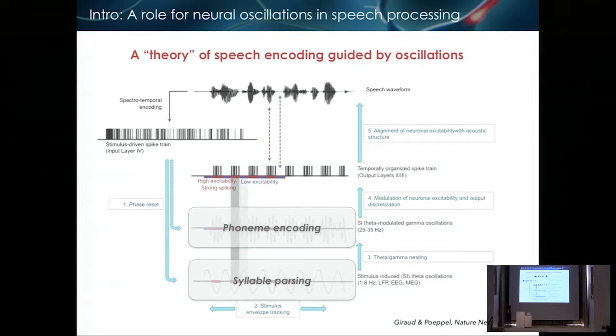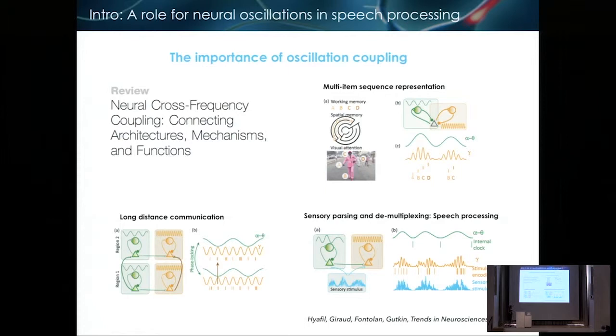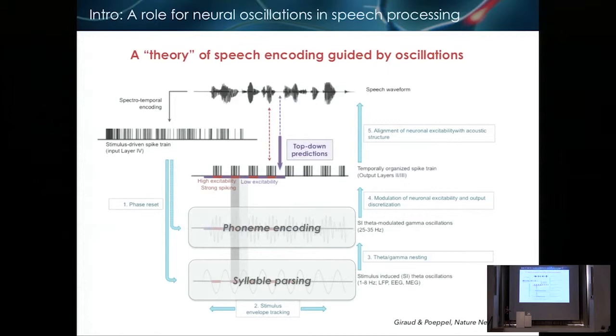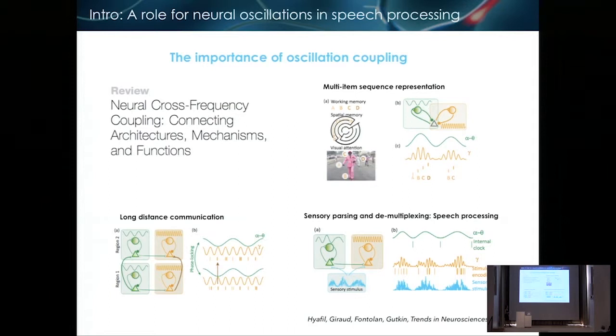So the signal enters layer four and then is somehow processed in superficial layers and goes out of it in a more structured way. And especially with an alternation of coding periods and some more latent or silent periods that are important for decoding. And Oded's work actually informs us a lot about the importance of that decoding time. In more detail, this is what we proposed, which again is becoming more and more wrong, but it was useful.